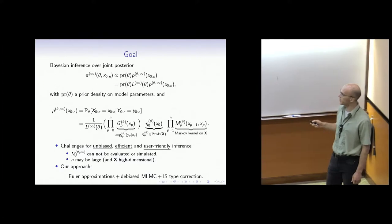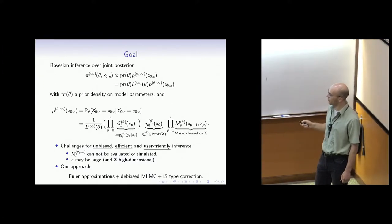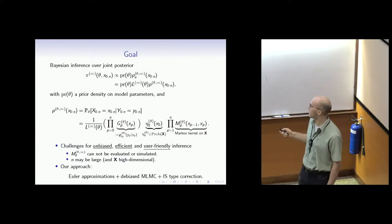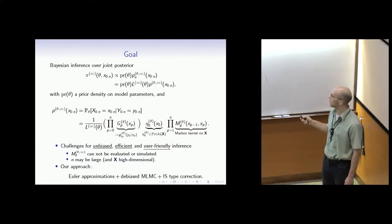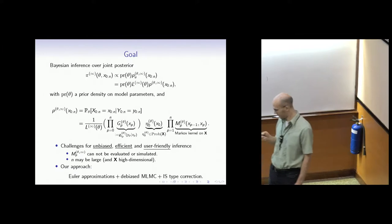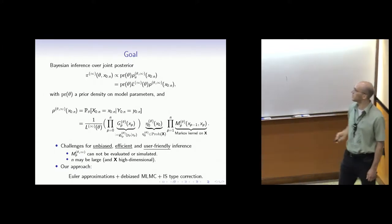The approach of this paper, which I have the opportunity to present, is based on three components: the well-studied and simple Euler approximations, the debiased MLMC techniques of McLeish and Rhee-Glynn, and an IS type correction of approximate MCMC.